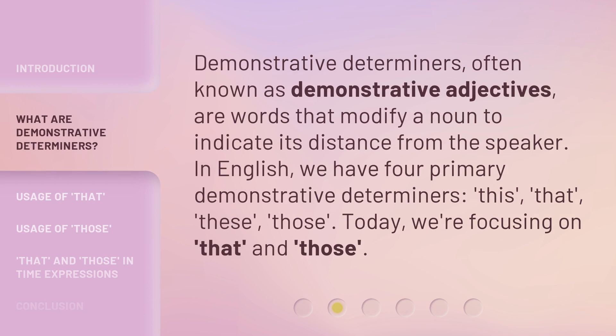Demonstrative determiners, often known as demonstrative adjectives, are words that modify a noun to indicate its distance from the speaker. In English, we have four primary demonstrative determiners: this, that, these, those. Today, we're focusing on that and those.